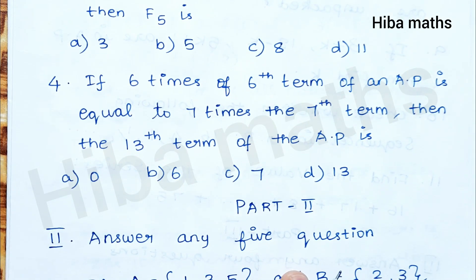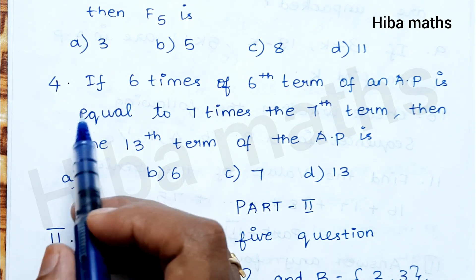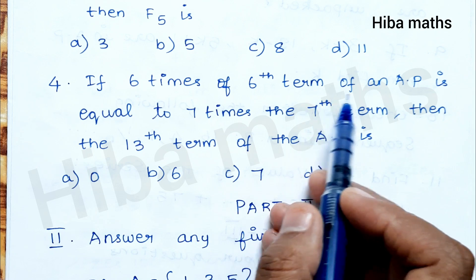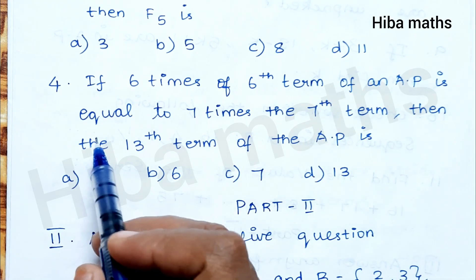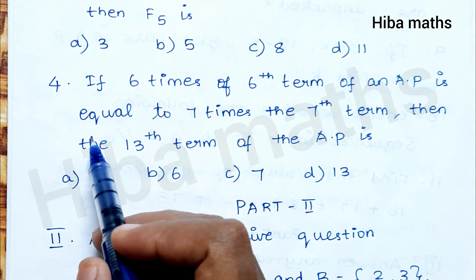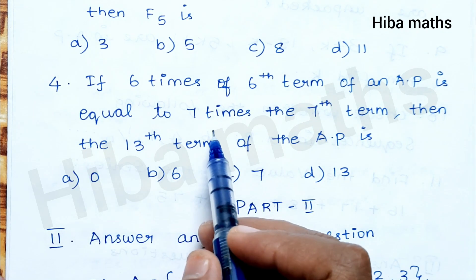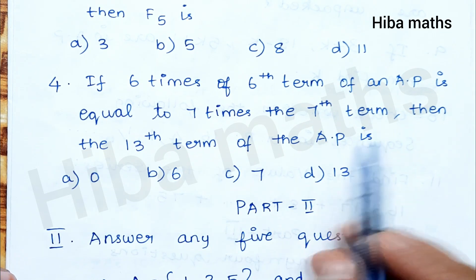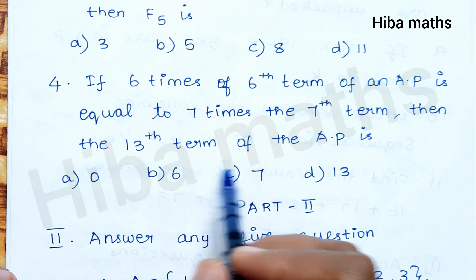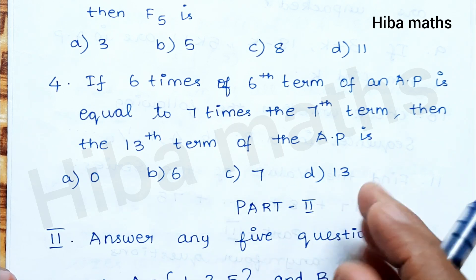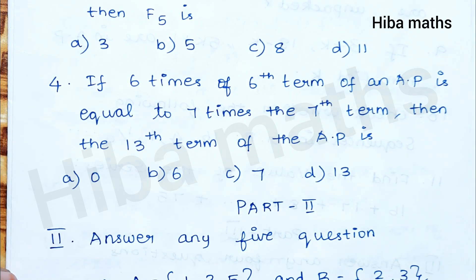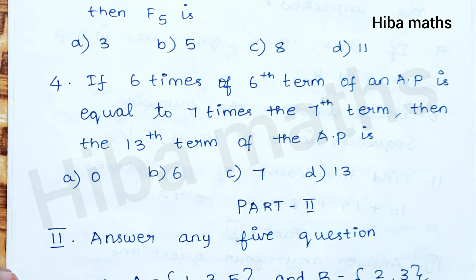Let's see the fourth question. If 6 times the 6th term of an AP equals 7 times the 7th term, then the 13th term of the AP is actually zero. So we have to solve the answer.